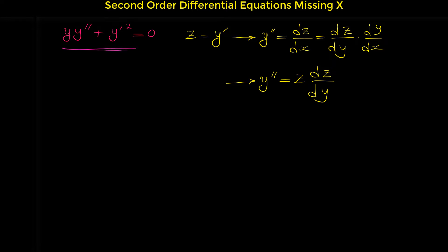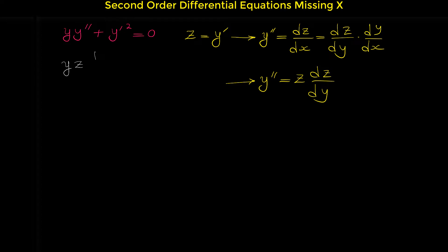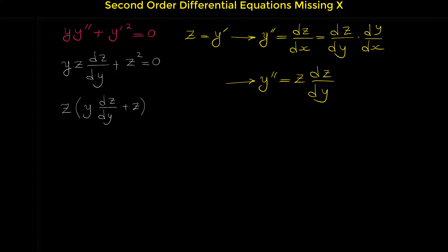So when a differential equation has no term with x, we use this substitution: y prime equals z, and y double prime equals z·dz over dy. Substituting into the original equation, y·y'' becomes y·z·dz over dy, and y prime squared becomes z squared, giving y·z·dz/dy + z² = 0. Factoring out z, we get z·(y·dz/dy + z) = 0.